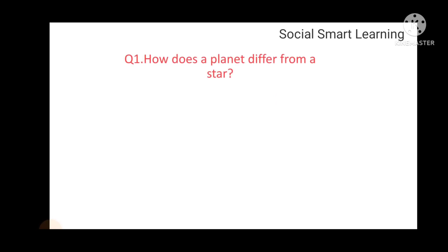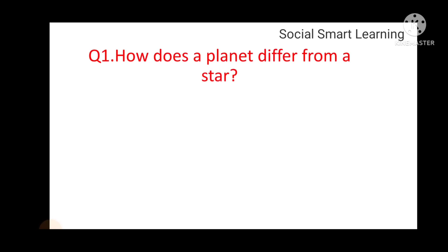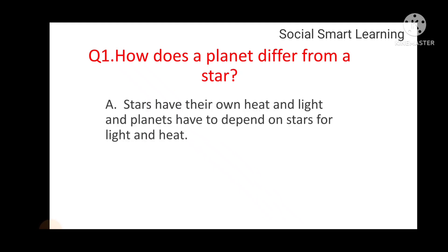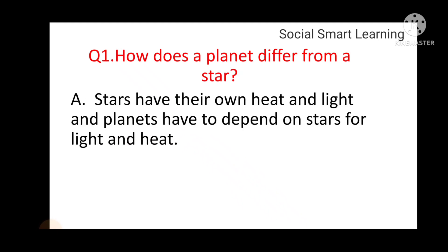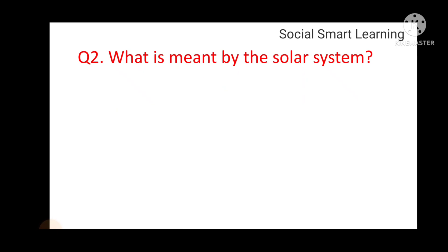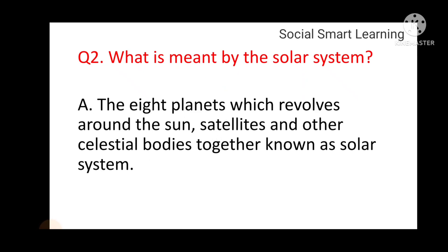Question 1: How does a planet differ from a star? Stars have their own heat and light, and planets have to depend on stars for heat and light. Question 2: What is meant by the solar system? The eight planets which revolve around the sun, satellites, and other celestial bodies together are known as the solar system.